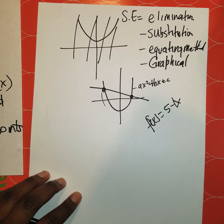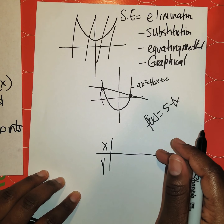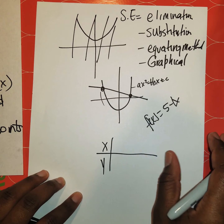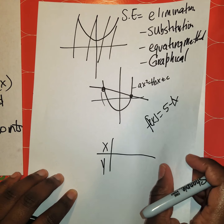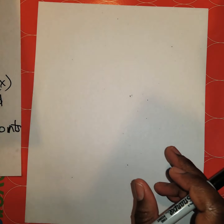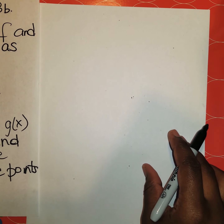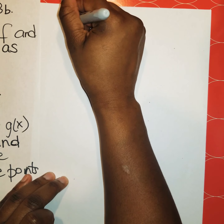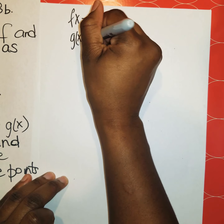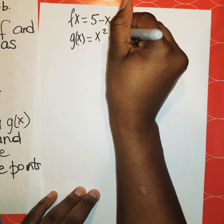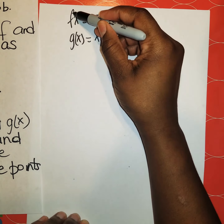For the graphical method, you'd find your table of values, pick three or four critical points, and plot them. If you need me to show the graphical method, let me know in the comments below. With that said, we're going to apply the substitution method, which seems to be the most appropriate. f of x equals 5 minus x, and g of x equals x squared minus 2x minus 1.